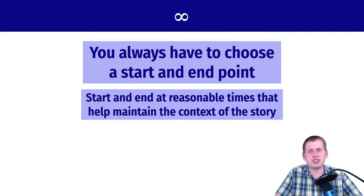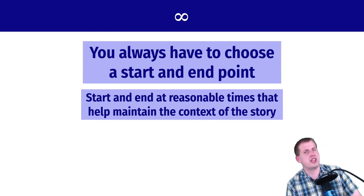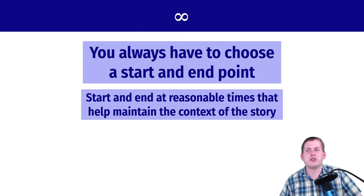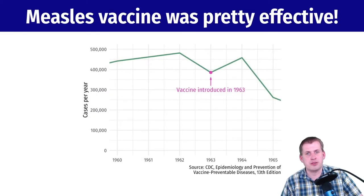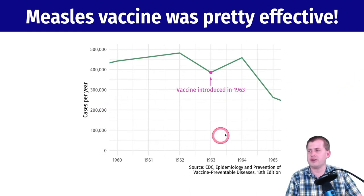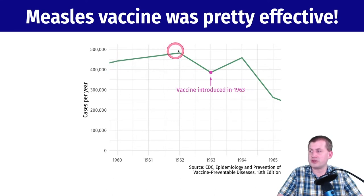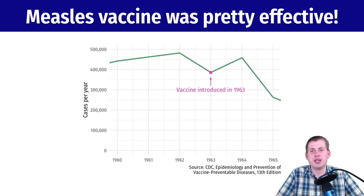A good example is looking at the number of measles cases in the United States before and after the measles vaccine was introduced. The vaccine was created in the early 60s and approved for general use in 1963. If we look at this plot showing cases per year between 1960 and 1965, it looks like the vaccine was great — we went from almost 500,000 cases down to 250,000, cutting it nearly in half.